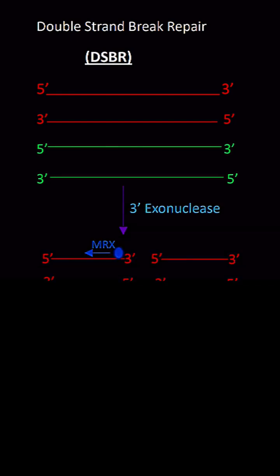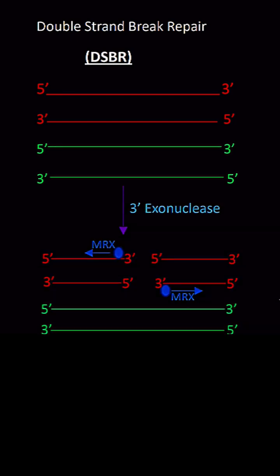In DSBR, first SPO11 comes and breaks the double strand of DNA. Then MRX protein comes and forms 5' overhang with the help of 3' exonuclease.